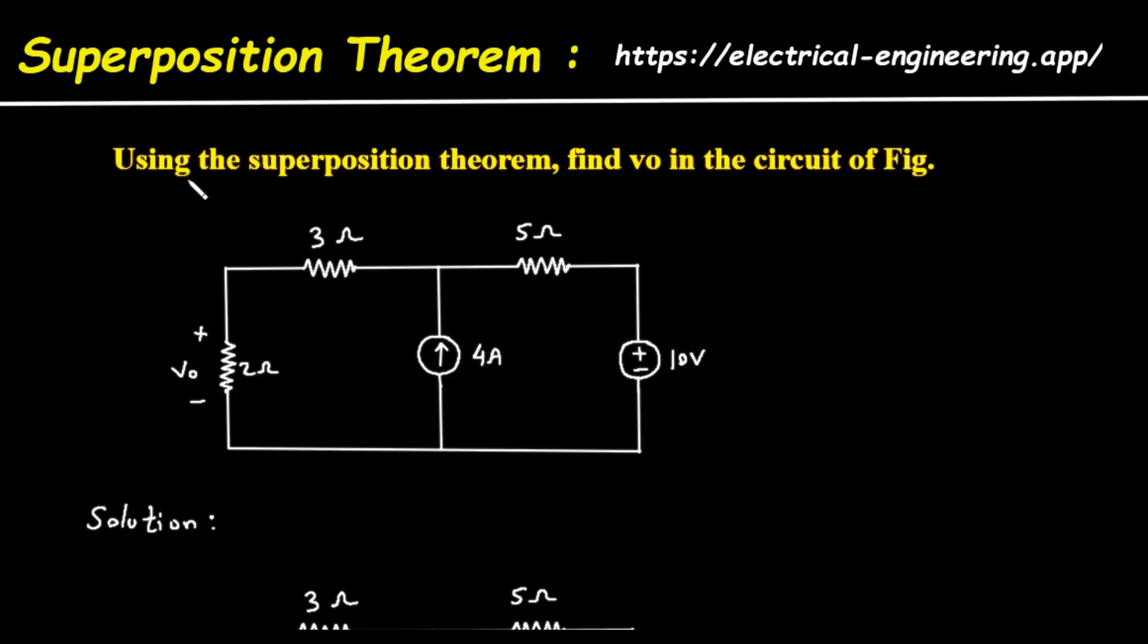The problem asks us to use the superposition theorem to find the voltage VO in the provided circuit diagram. The circuit contains a 2 ohm resistor on the left, where the voltage VO is measured. This is in series with a 3 ohm resistor. In the center, there is a 4 ampere current source pointing upwards. To the right, there is a 5 ohm resistor in series with a 10 volt voltage source.